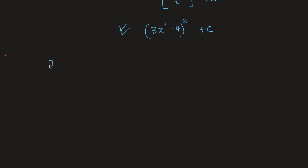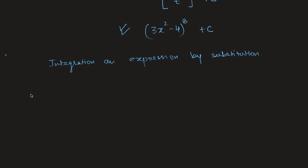So what we have done is understood how to integrate an expression using the method of substitution. Now let's look at one more example. The first part: differentiate (x² - 3x + 5)⁶ with respect to x.